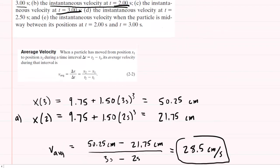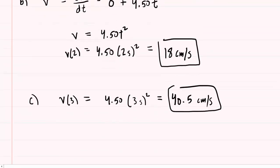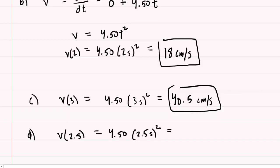In part D, it wants the instantaneous velocity at 2.5 seconds. So once again, we're going to plug in 2.5 seconds into our velocity equation. So v of 2.5 — when you work this out on your calculator, you're going to get approximately 28.1 centimeters per second.